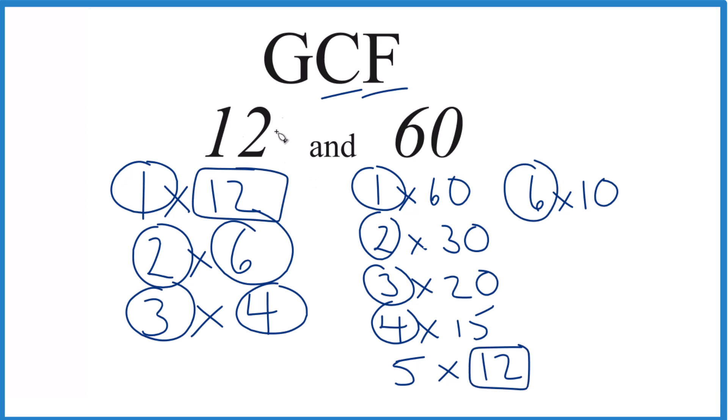So 12 goes into 12 and into 60 evenly. So the GCF for 12 and 60, that is 12.